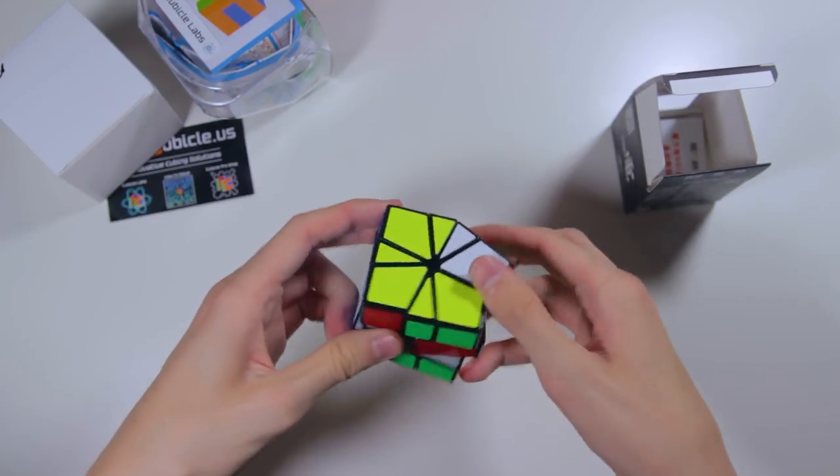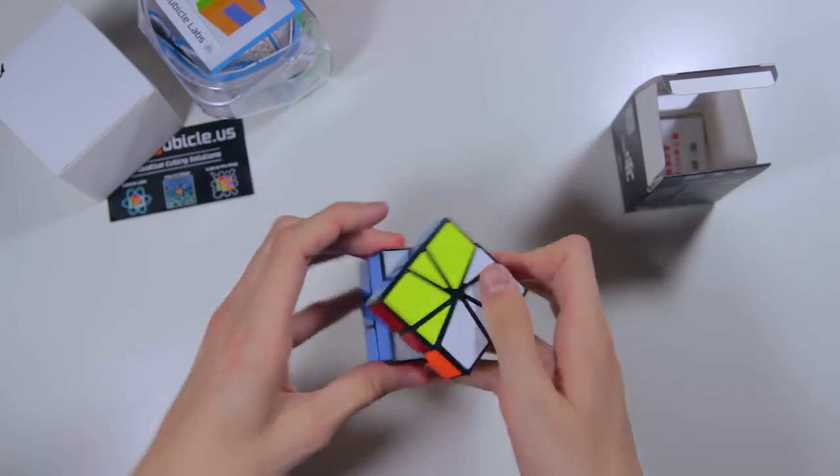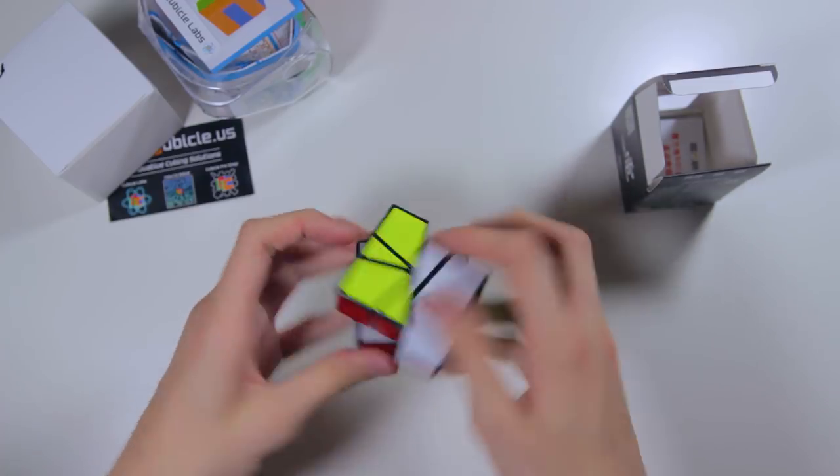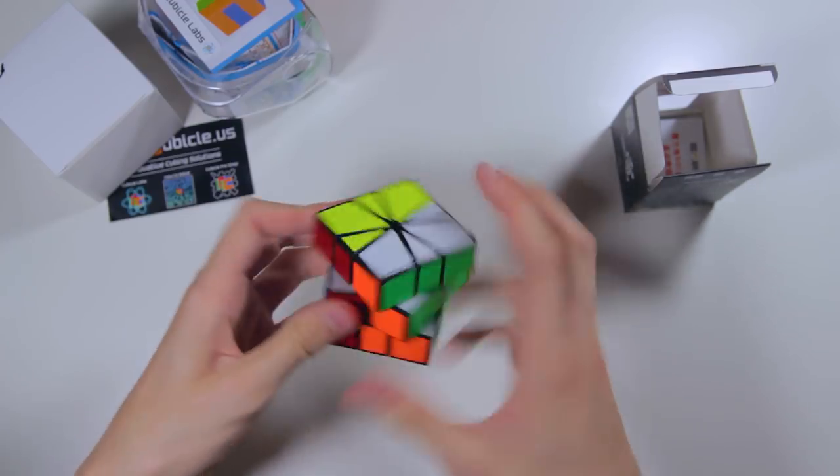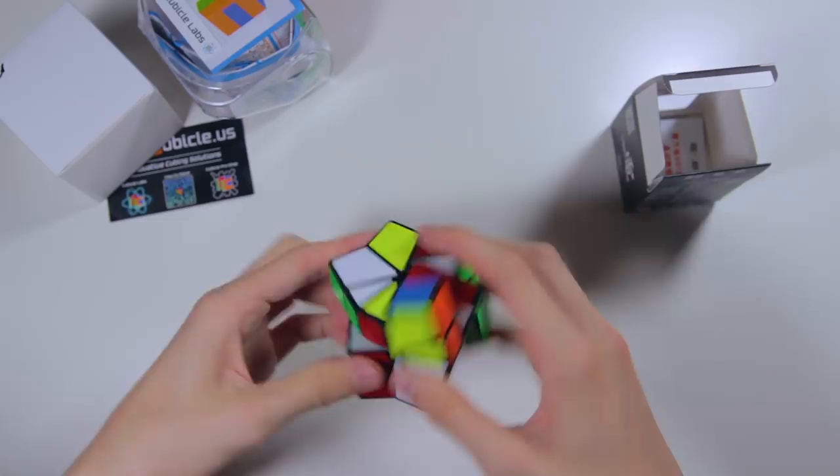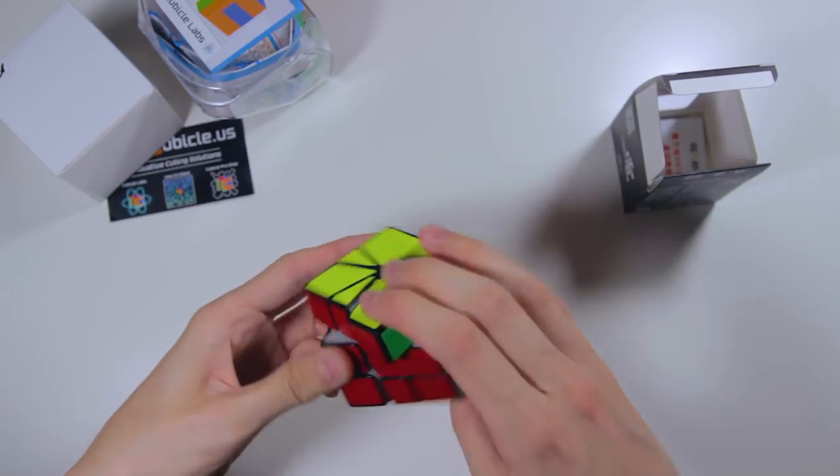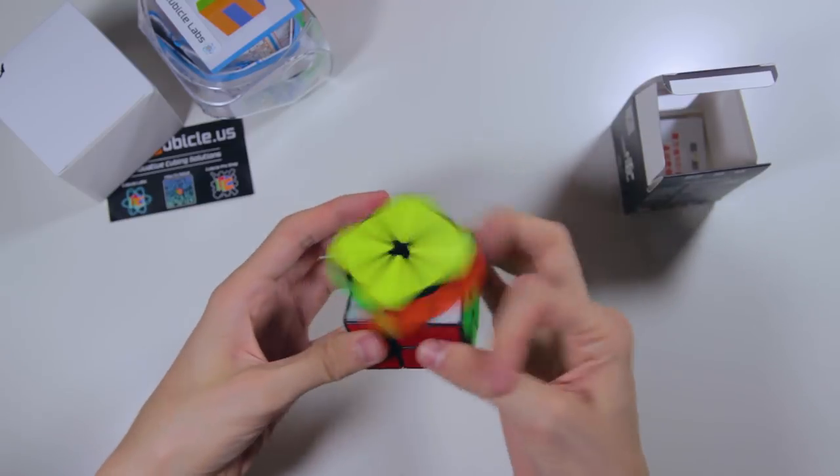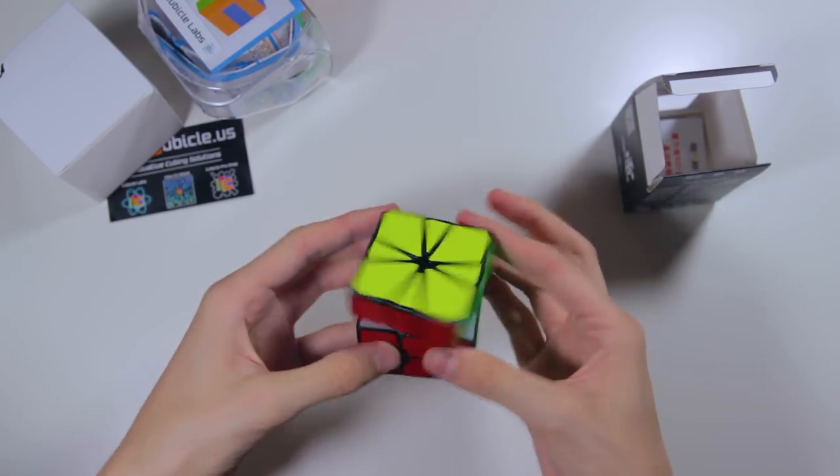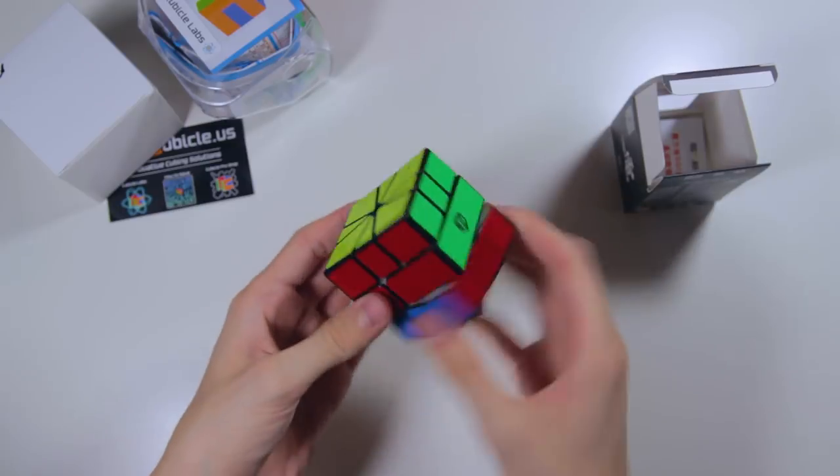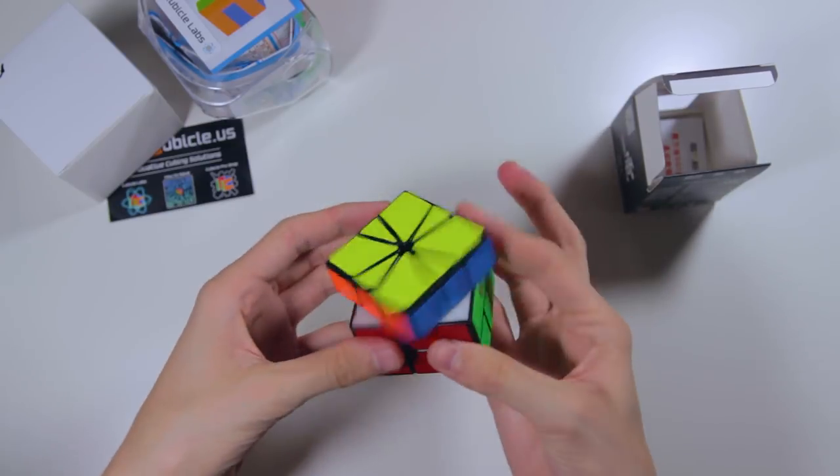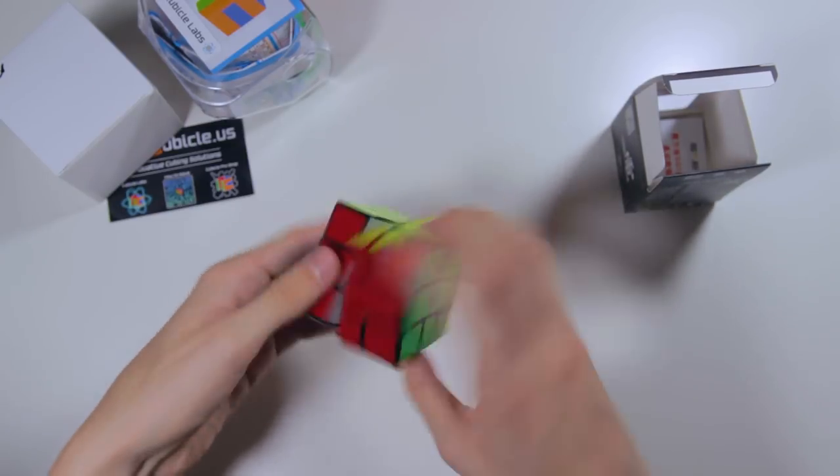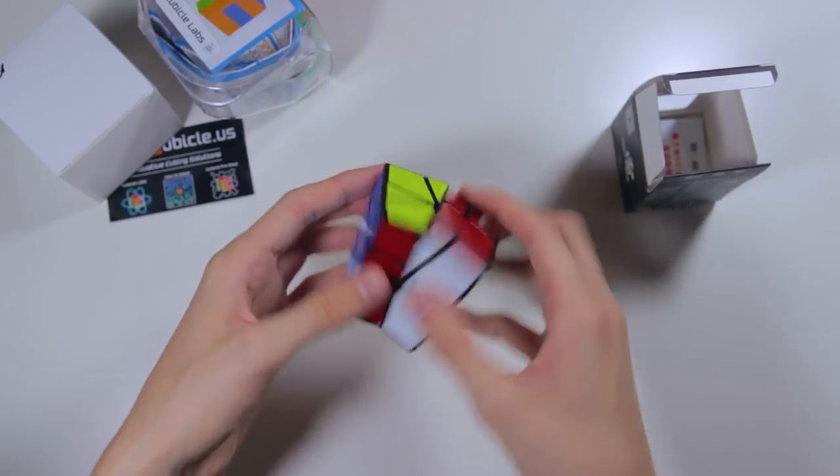Now I do not do square one, so I am clearly not that great at turning. Alright, so it has an interesting feeling - it's very swishy and sort of clicky on the slice layer.